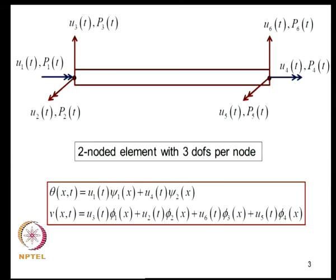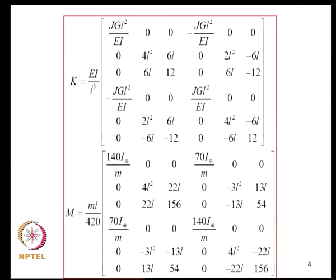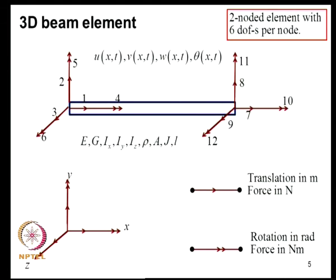In a 3-dimensional frame element, the field variables are theta and V. We interpolate theta in terms of 2 linear interpolation functions and displacement V in terms of 4 cubic polynomials. This is a grid element which is a 2-noded element with 3 degrees of freedom per node. In a 3D element there will be axial deformation, twisting, in-plane bending and out-of-plane bending, so at every node there will be 6 degrees of freedom, giving a 2-noded beam element 12 degrees of freedom.